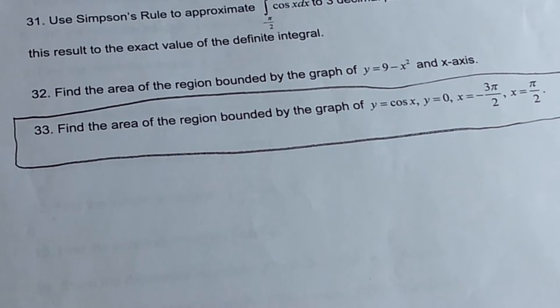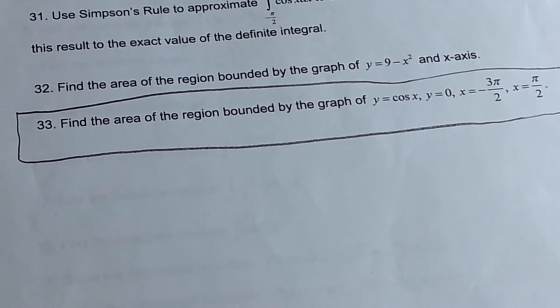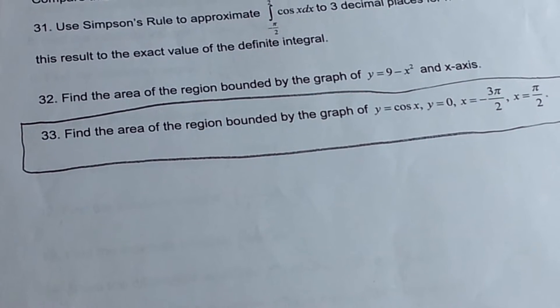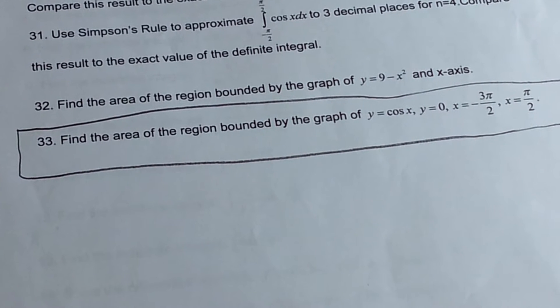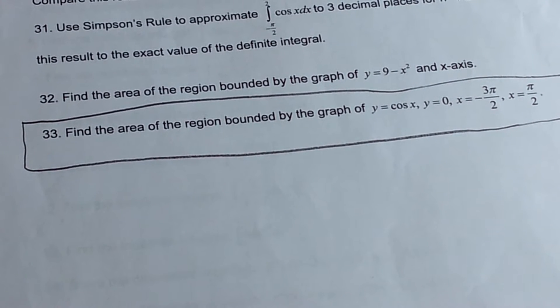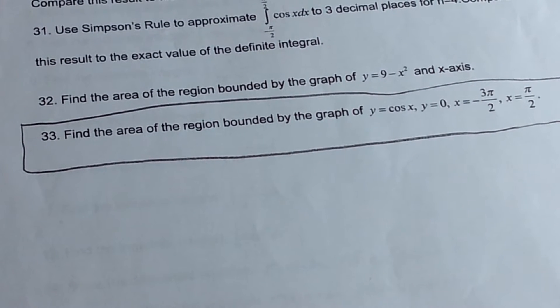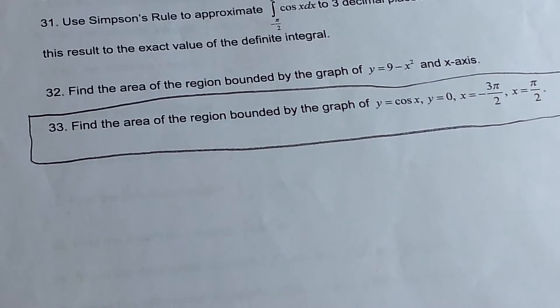Today we're going to find the area of the region bounded by the graph of y equals cosine of x and y equals zero, between x equals negative 3 pi over 2 and x equals pi over 2. So first what we're going to do is draw the graph.